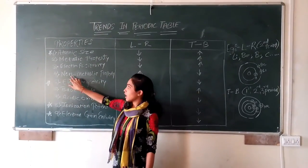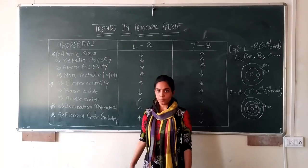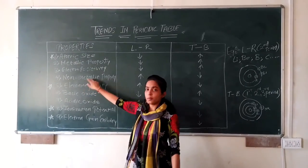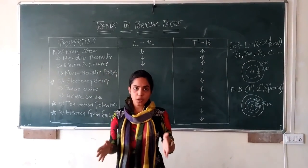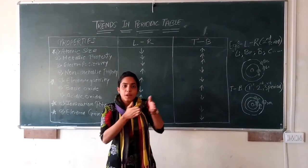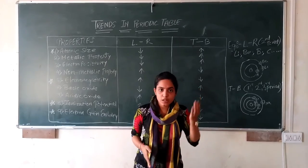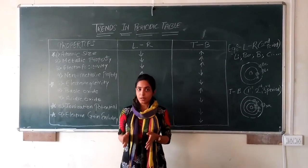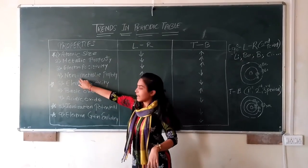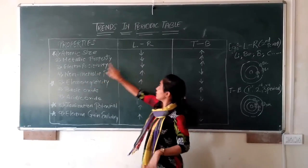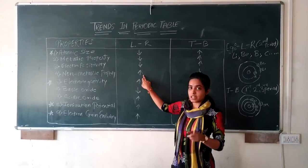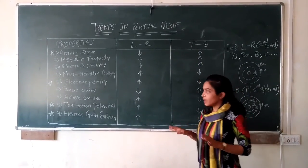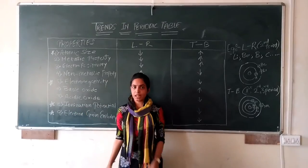Now, non-metallic property is the opposite of metallic property. From left to right, non-metallic property increases, because P-block elements contain most of the non-metallic elements. But from top to bottom, non-metallic property decreases.